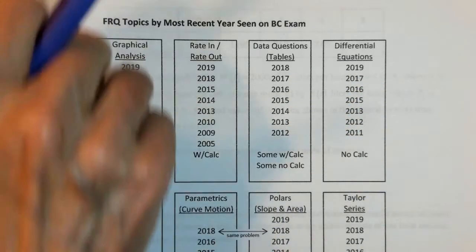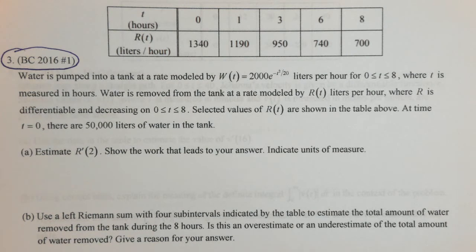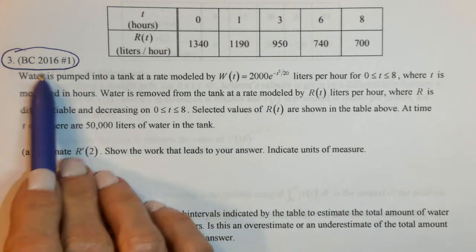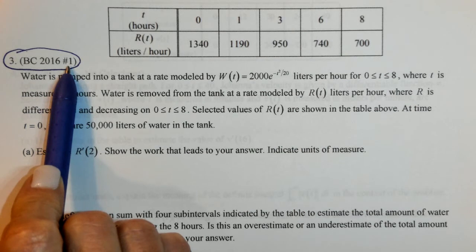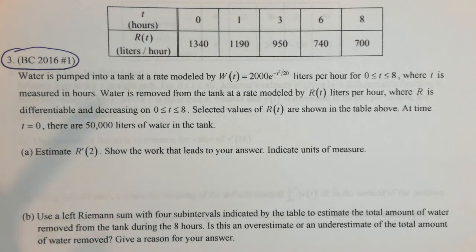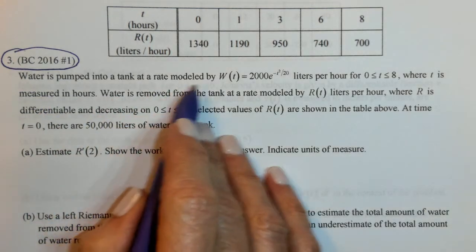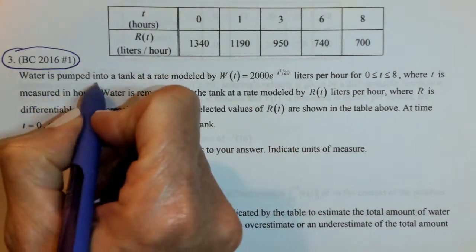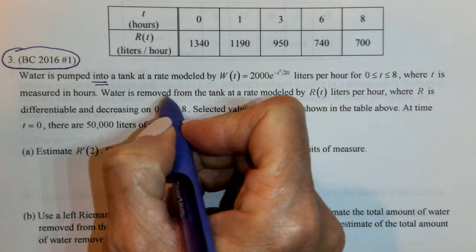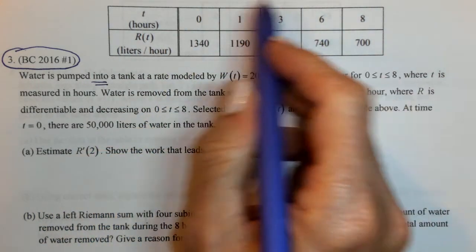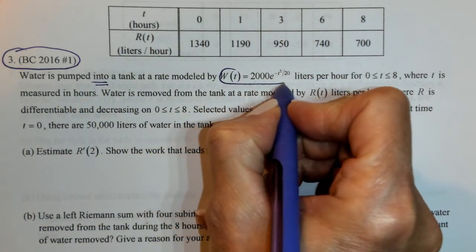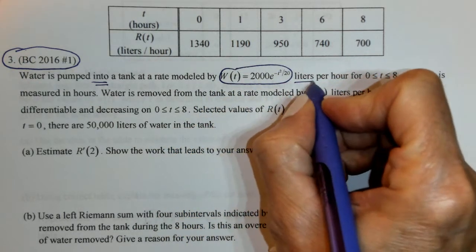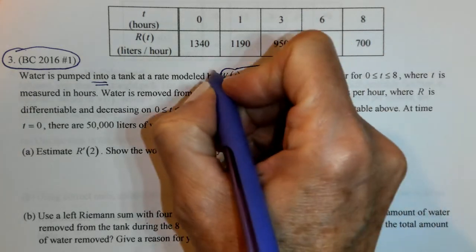Let's take a look at the worksheet packet, looking at the 2016 number 1. Since it's number 1, this was with a calculator, so I'm going to get my calculator handy. It says water is pumped into a tank at a rate modeled by W of T in liters per hour — that's our rate in — for time 0 to 8, T measured in hours.